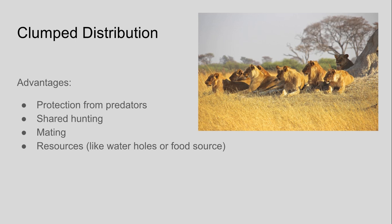This is a picture of a lion pride, and as you notice they're all kind of gazing in the same direction. If you have a group of animals, you can share responsibilities for gathering food and also for raising your young. There's an advantage of having females and males in the same group clumped together because mating season is a lot easier. And it also helps for resources like around watering holes or food sources.